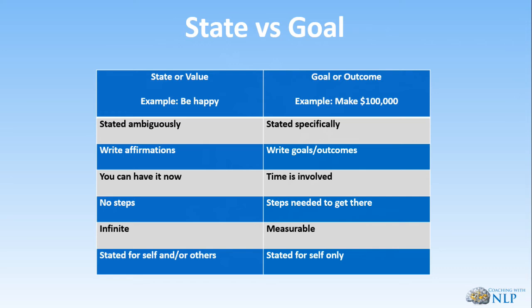When the going gets tough, the tough gets going, so really the goal should be for self. Whereas with a value or a state, it can be for others — for example, in our relationship we want to have love and mutual respect. That's the difference between a state and a goal, and it's important to understand the differences and know which is which, because sometimes people get a little confused.